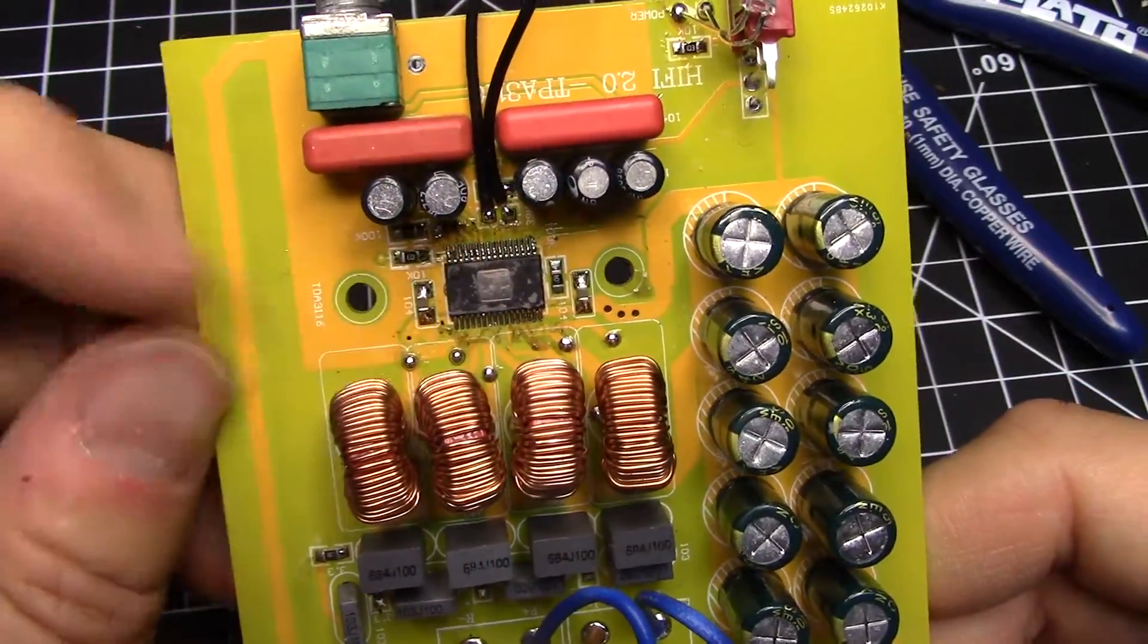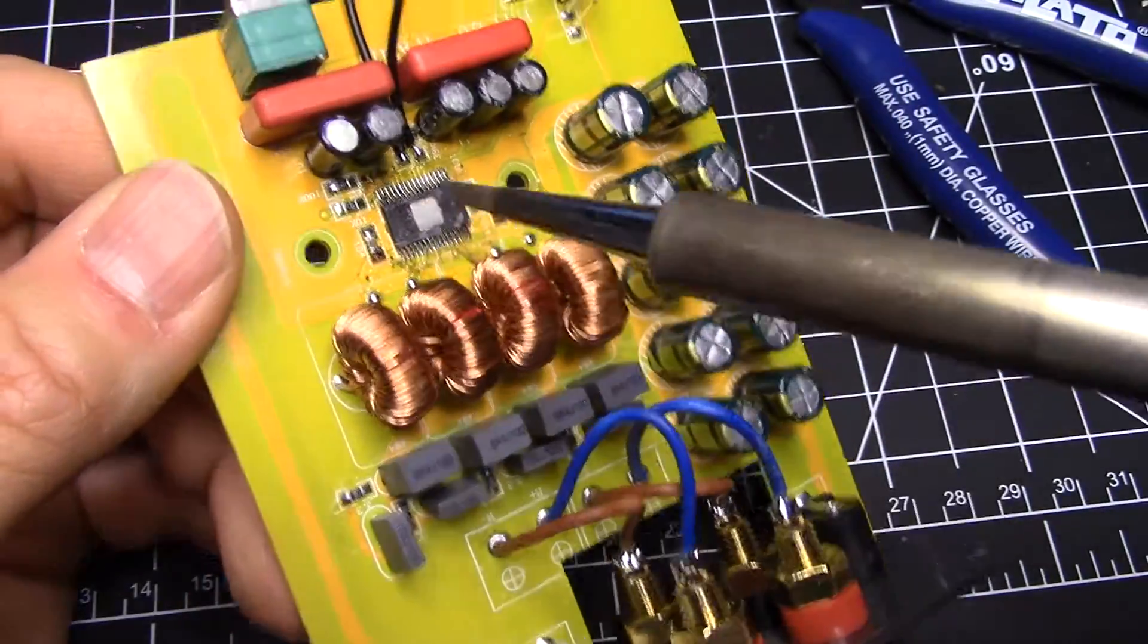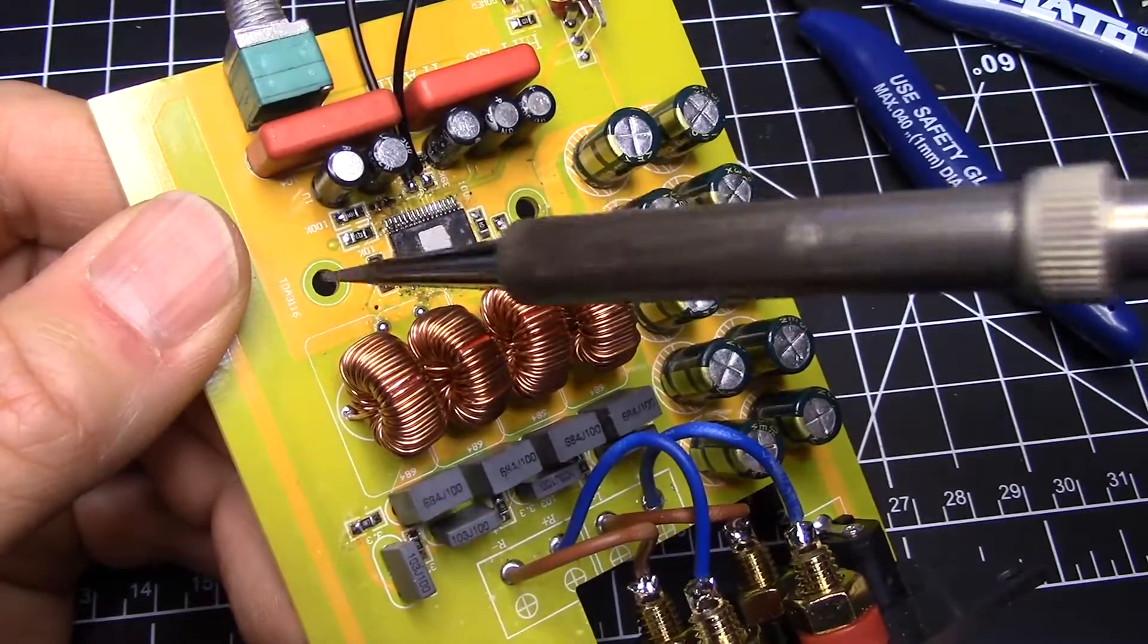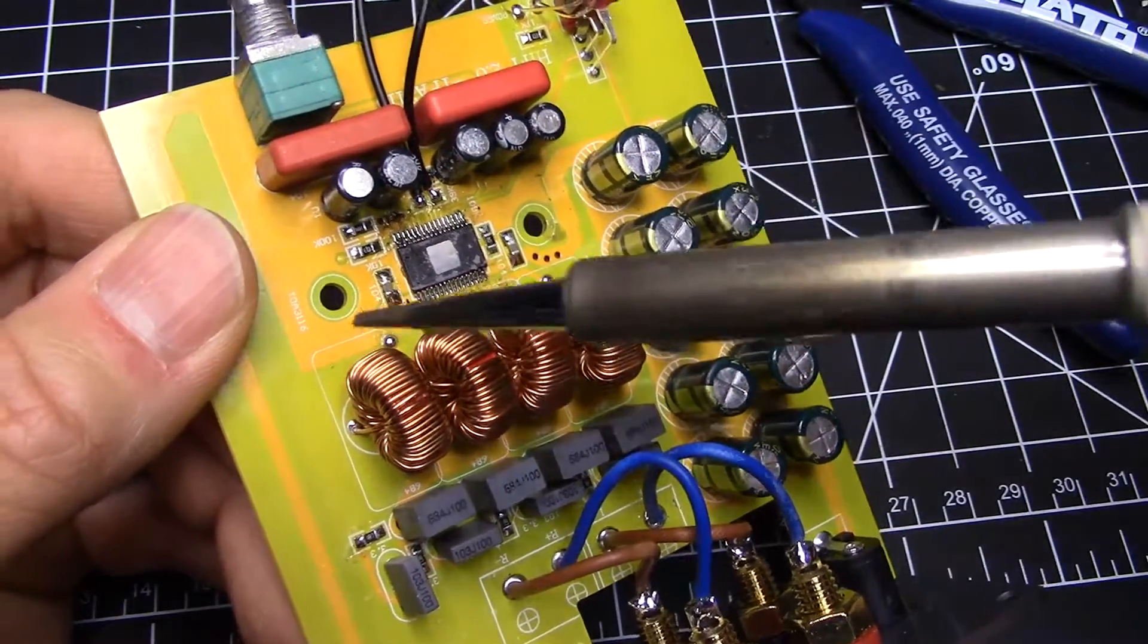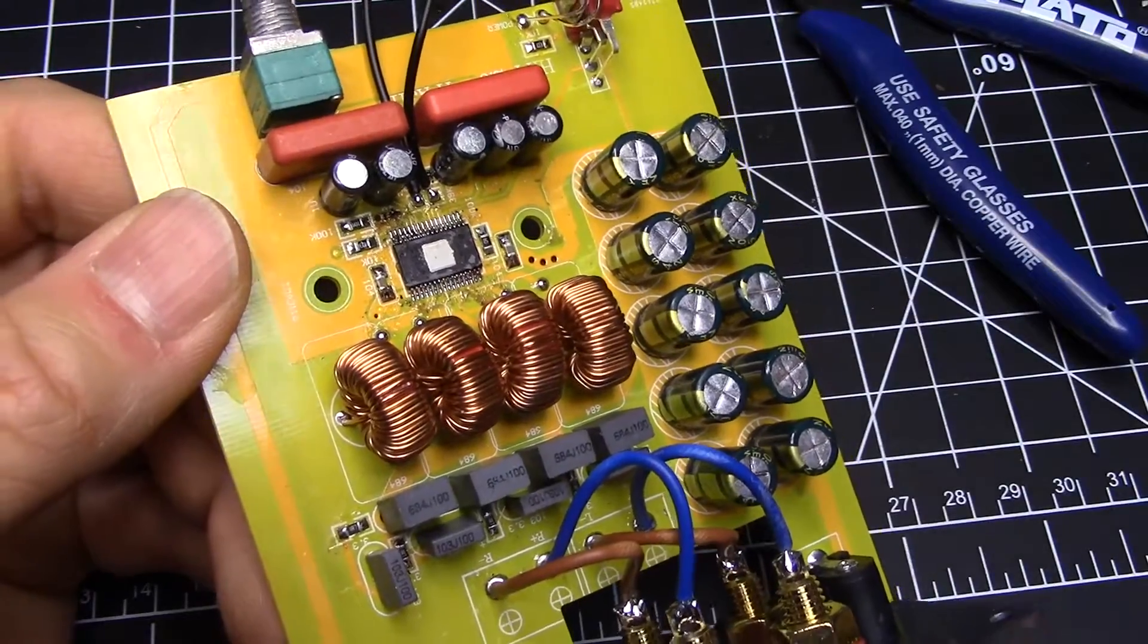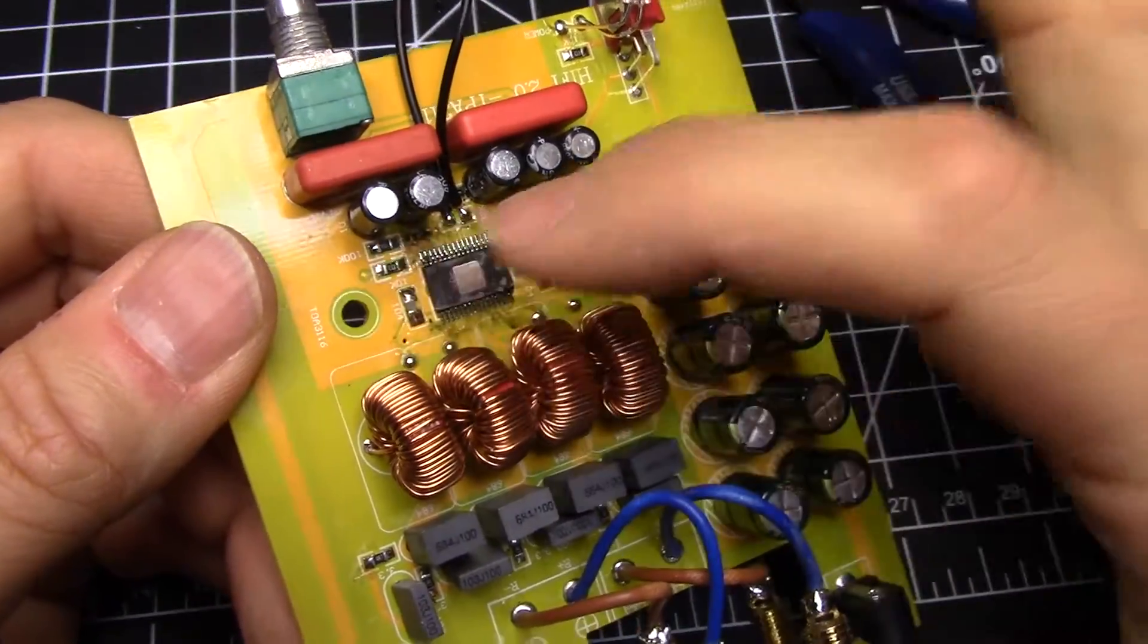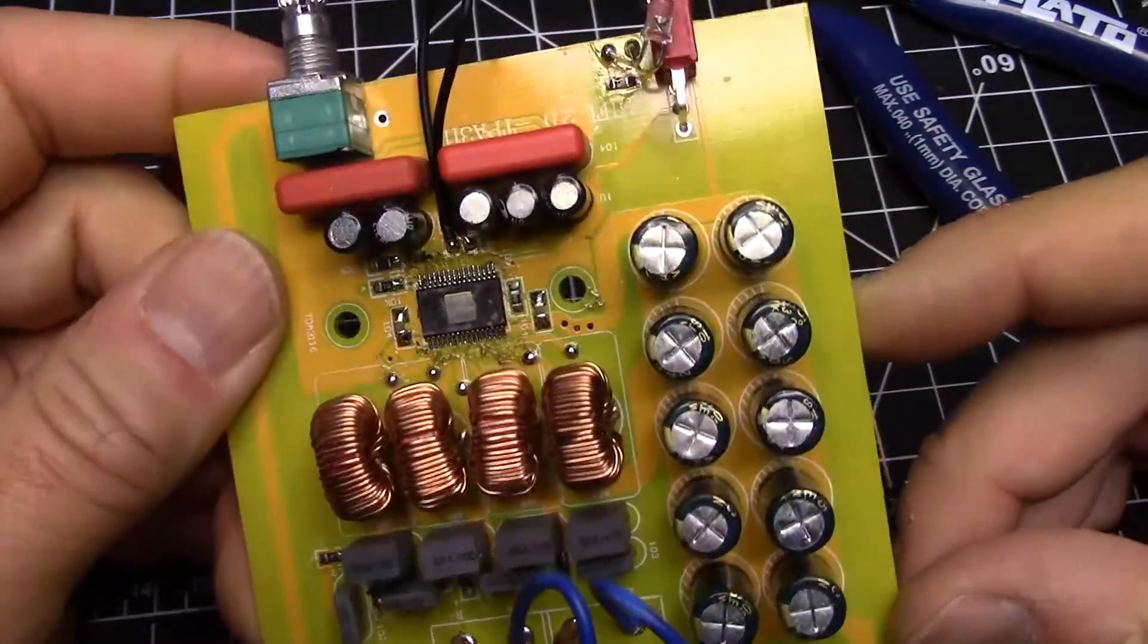To desolder surface mount, it's pretty easy. You basically just put a blob of solder on each side of a resistor, which gives thermal mass. Then you quickly touch both and flick the chip right off. The extra solder allows it to stay molten long enough. That's the easiest way to do it.